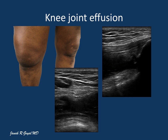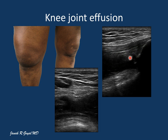Knee joint effusion is one of the most common pathologies seen in practice. It appears as a hypoechoic widening of the suprapatellar recess. Here is a patient with right knee swelling and a sonographic image showing hypoechoic widening of the suprapatellar recess. Here is the patella, quadriceps tendon, suprapatellar fat pad, pre-femoral fat pad, the femur, and the widening of the suprapatellar recess between these two fat pads.